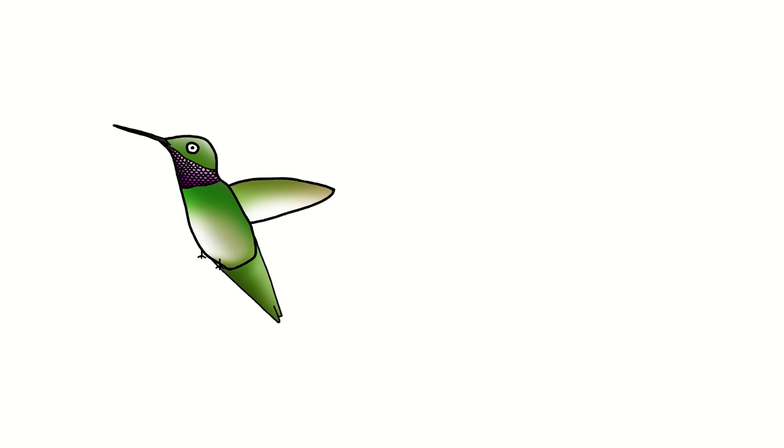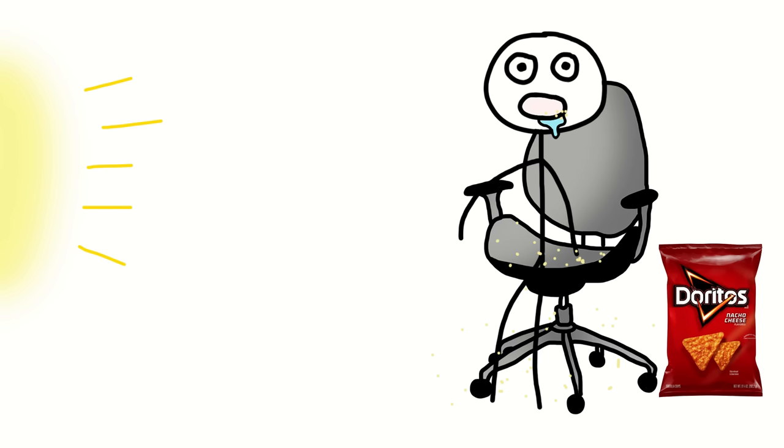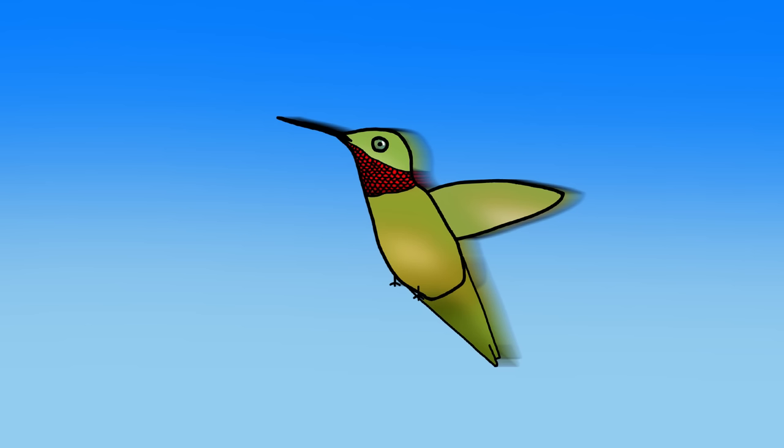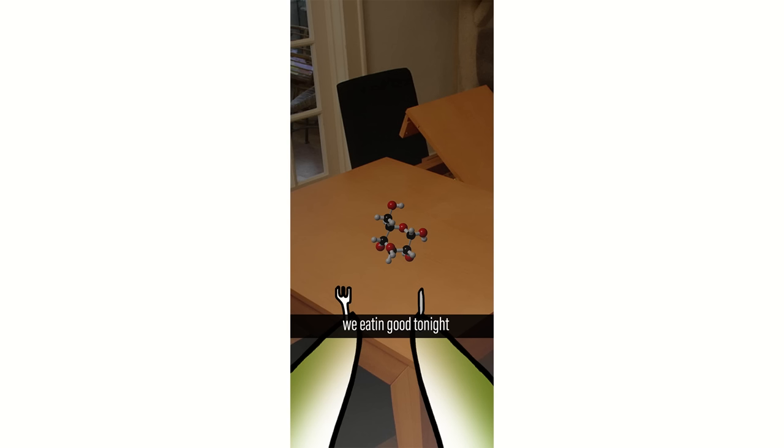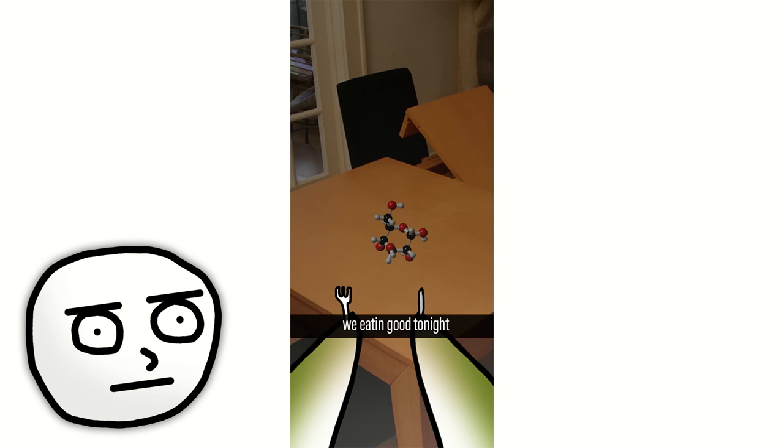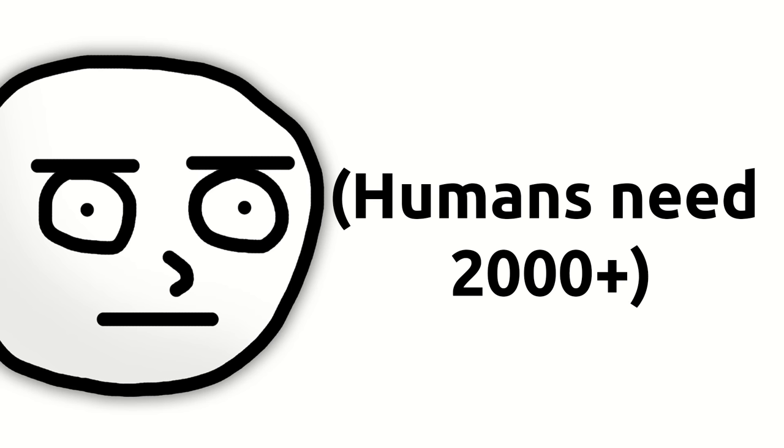Now what separates the hummingbird from the average human is the ability to unstick themselves from their chair. Due to the active lifestyle of the hummingbird, its metabolism is the fastest out of all living animals. Surprisingly, hummingbirds still only eat 10 calories a day, and if that sounds like nothing, well, you'd be right.